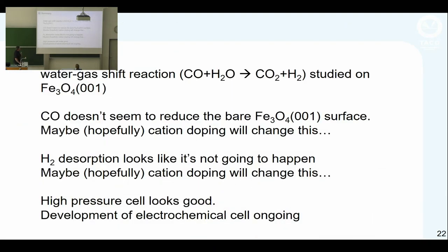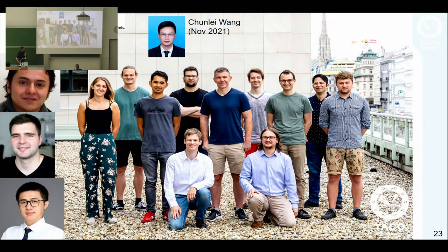In summary, we've looked at water gas shift reaction. CO doesn't seem to reduce the bare surface very well - maybe cation doping will change this, maybe going to higher temperatures will help. Hydrogen desorption doesn't look like it'll happen on this surface - it wants to come off as water if you have hydroxyl groups. Maybe cation doping will change this. The high-pressure cell looks pretty good, and electrochemical cell development is ongoing.